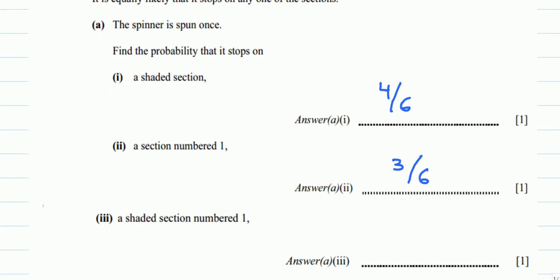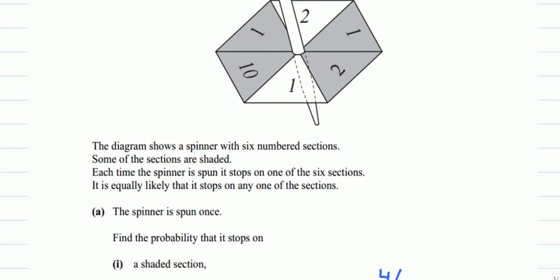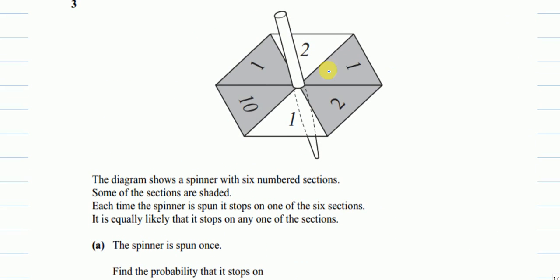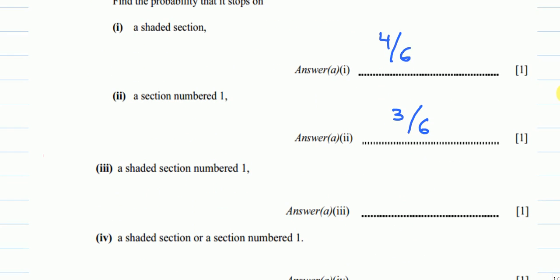Part three: a shaded section numbered one. We need a shaded section which is numbered one — we have just two of them which are shaded and numbered one, because the other one is unshaded. So we say there are just two out of the six.